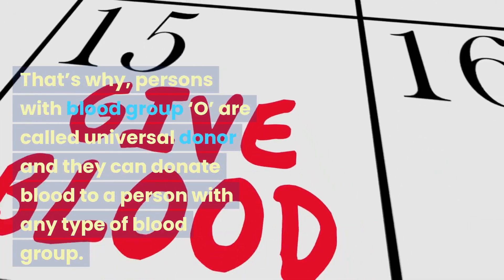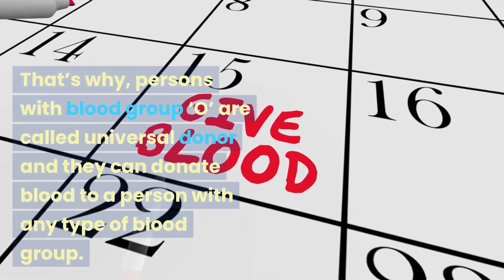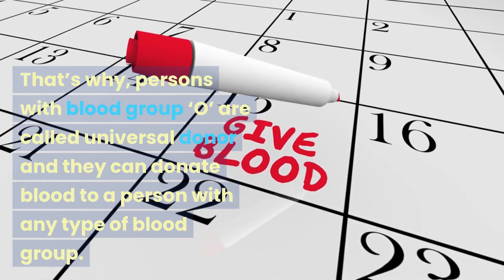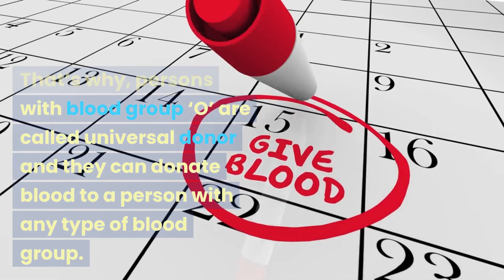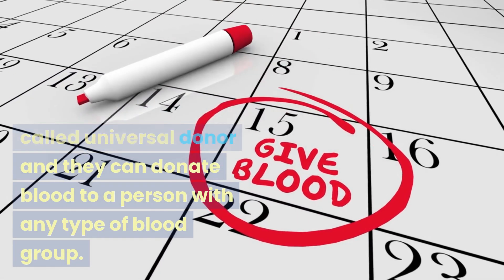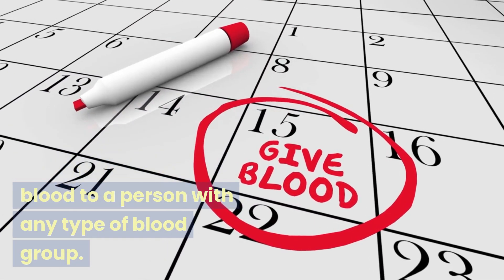That's why persons with blood group O are called universal donors and they can donate blood to a person with any type of blood group.